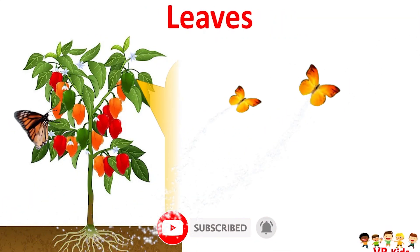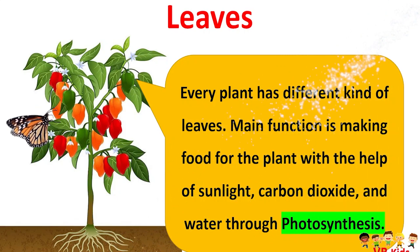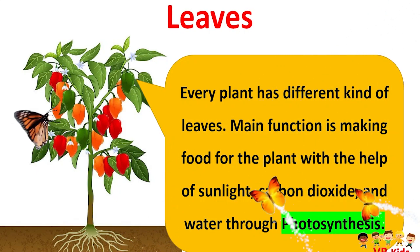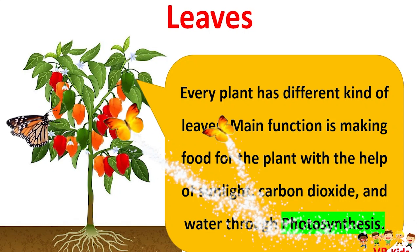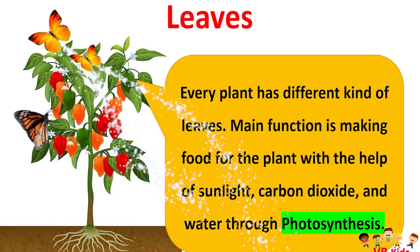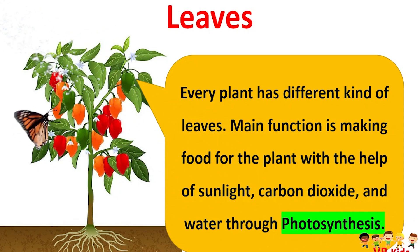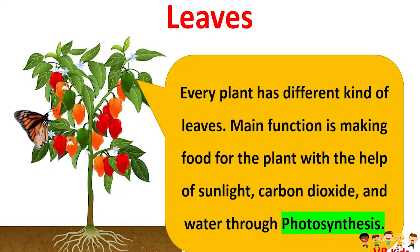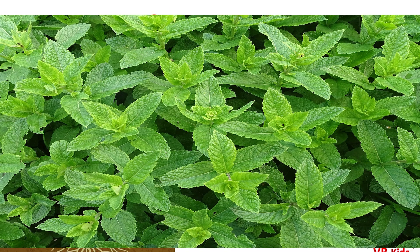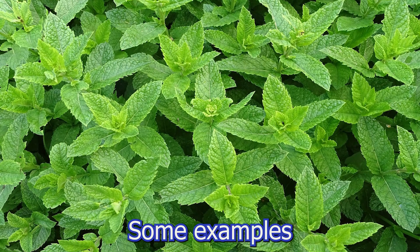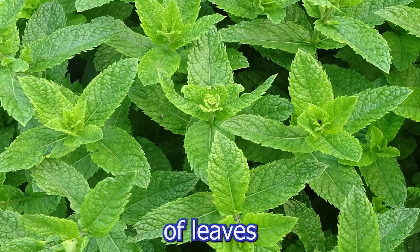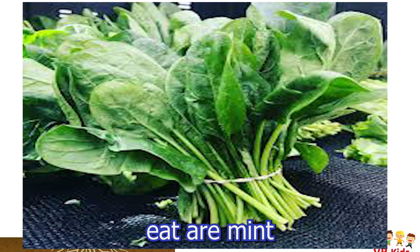Leaves — every plant has different kinds of leaves. Their main function is making food for the plant with the help of sunlight, carbon dioxide and water through photosynthesis. Some examples of leaves that we eat are mint and spinach.